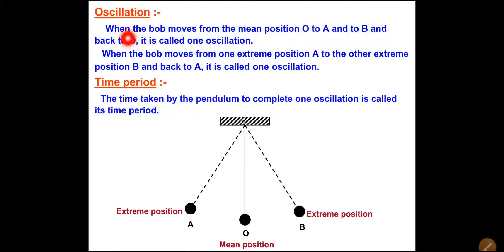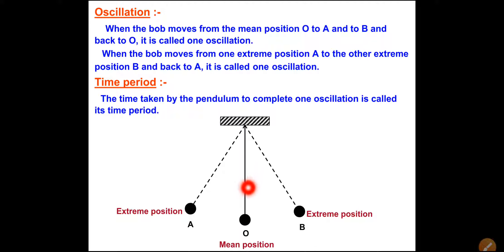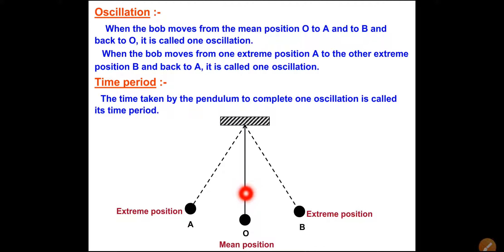What is one oscillation? When the bob moves from the mean position O to A, then to B, and back to O, it is called one oscillation. In the diagram, O is the mean position. When the bob moves from O to A, then to B, and back again to O, that completes one oscillation.